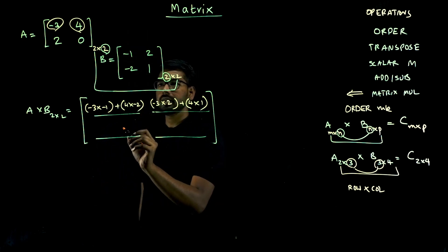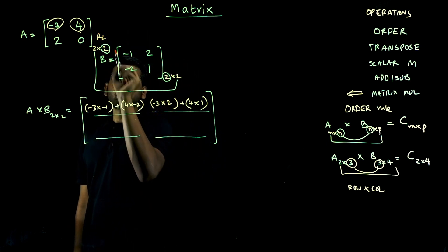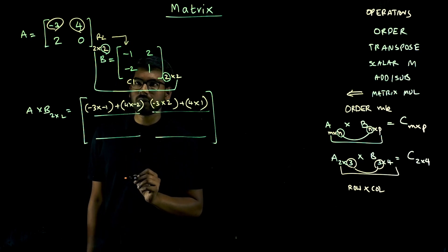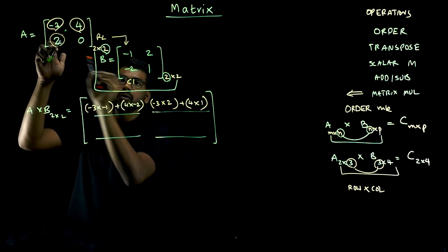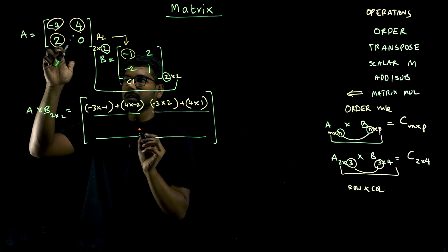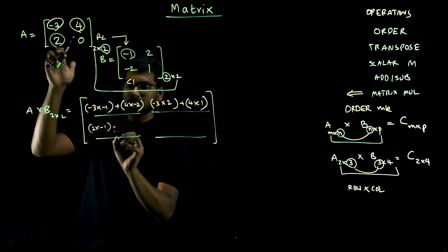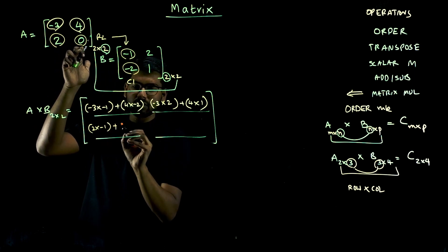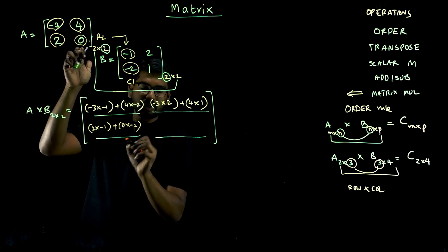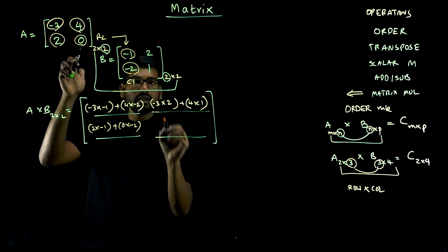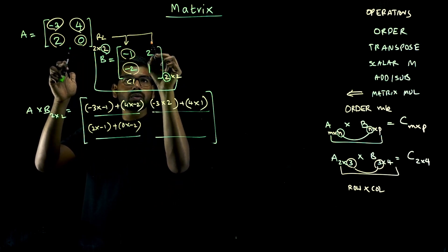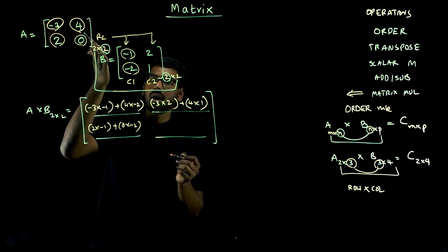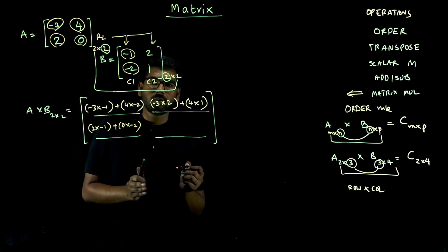For row 1 of A and column 2 of B: minus 3 into 2 plus 4 into 1. For row 2 of A into column 1: first element 2 into minus 1, plus second element 0 into minus 2. For row 2 into column 2: 2 into 1 plus 0 into 1. So we have R1C1, R1C2, R2C1, R2C2 — all possible combinations.